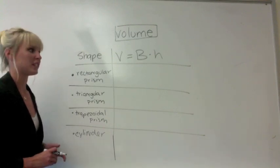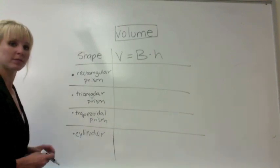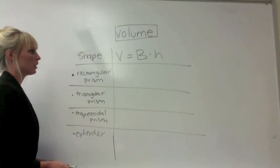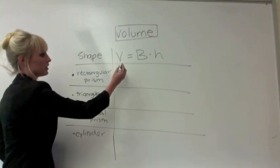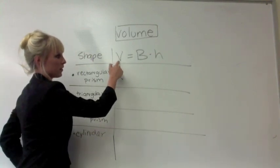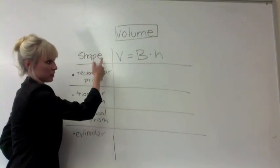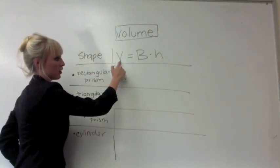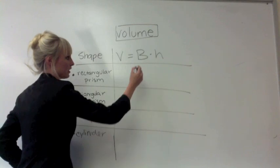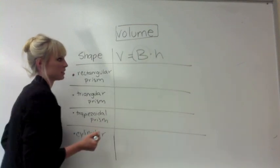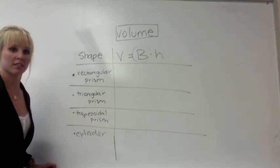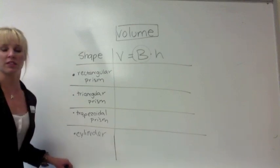Pause the video and take a moment to write down this chart. You've been given the general formula to find the volume of any prism, and its volume is equal to the area of the base times the height. This big V, this uppercase V, stands for the area of the base. Now, these shapes all have different bases.